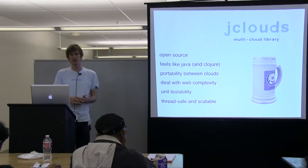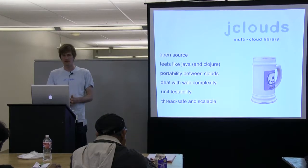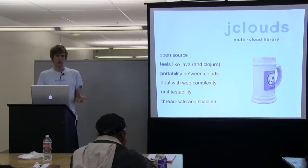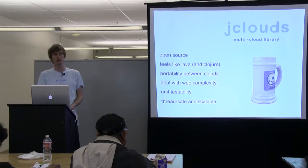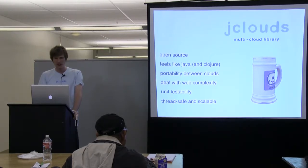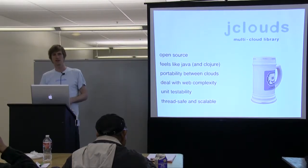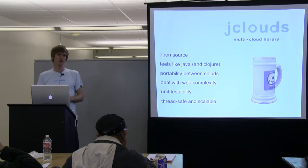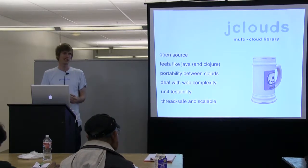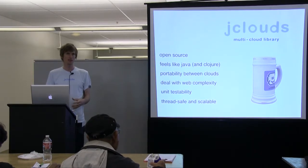We definitely focus on portability between clouds. That wasn't our first goal as a project — the first goal was actually just to make a reasonable S3 library, and through that, dealing with web complexity and making things easier to unit test. From a developer's perspective, you don't want to be testing with your credit card if you can avoid it. Because JClouds started as a plugin to Infinispan — a Red Hat JBoss data grid project — one of the first things we had to deal with was thread safety issues. When I say scalability, I'm really talking about scalability inside the JVM.